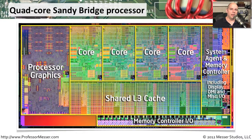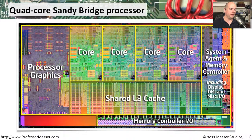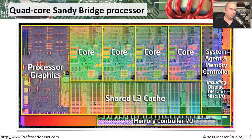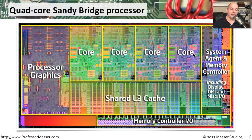Here's an example of a multi-core processor — this is Intel's Sandy Bridge processor series, a quad core. You can see the four cores right across the top. These four cores have inside of them their own L1 and L2 cache. And down here at the bottom is a shared L3 cache. So you have a lot of computing capability in each one of these cores, meaning this processor can effectively be performing calculations on four separate instructions at the same time.